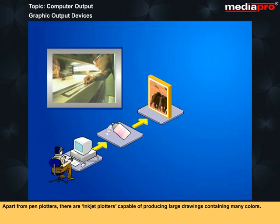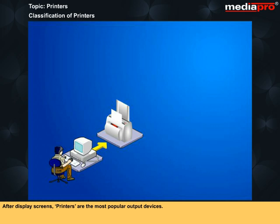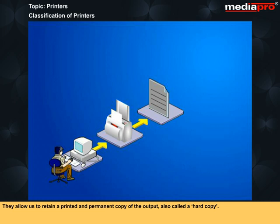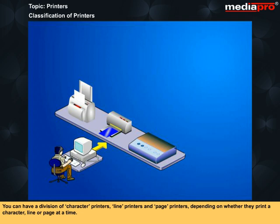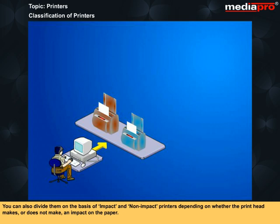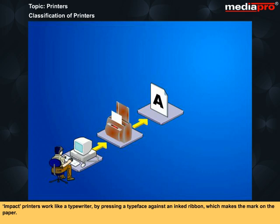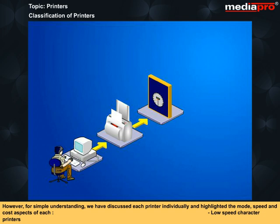After display screens, printers are the most popular output devices. They allow us to retain a printed and permanent copy of the output, also called a hard copy. There are broad classifications of printers based on how they print. You can have a division of character printers, line printers, and page printers, depending on whether they print a character, line, or page at a time. You can also divide them on the basis of impact and non-impact printers, depending on whether the print head makes or does not make an impact on the paper. Impact printers work like a typewriter, by pressing a typeface against an inked ribbon which makes the mark on the paper.